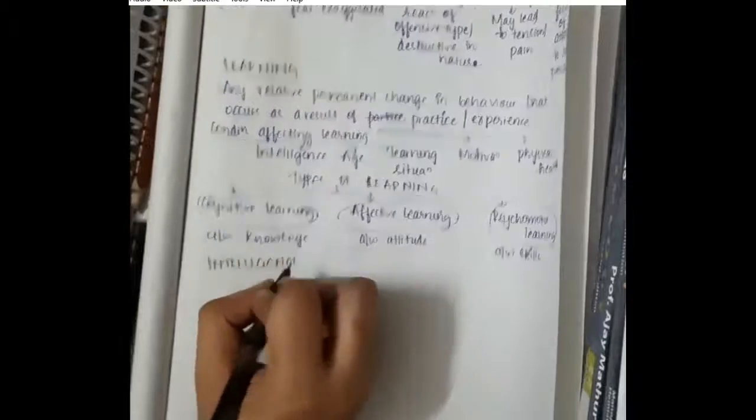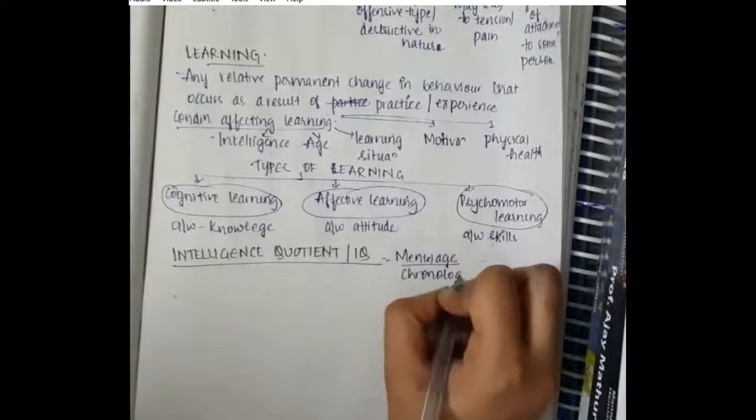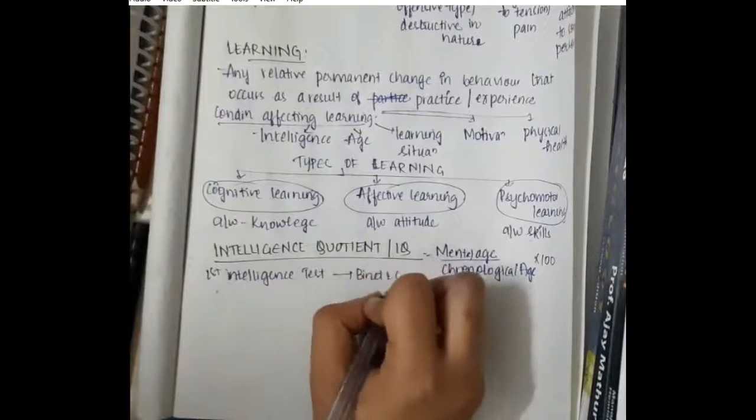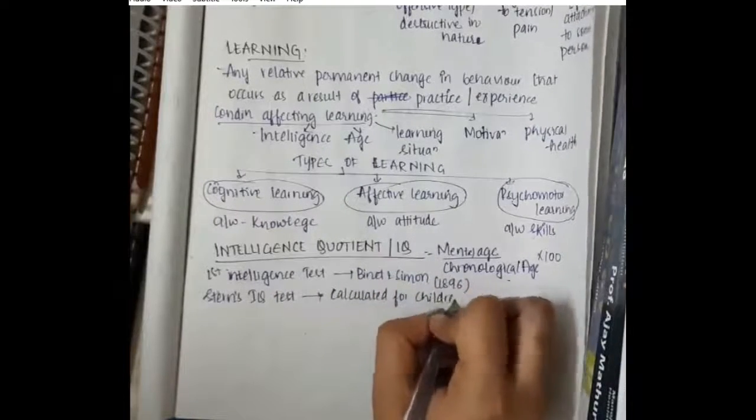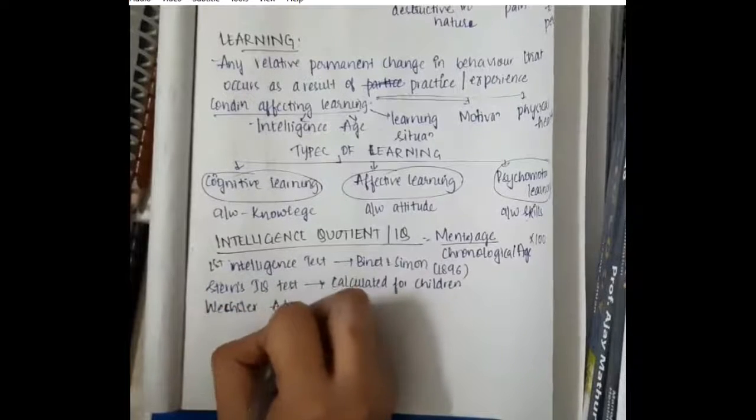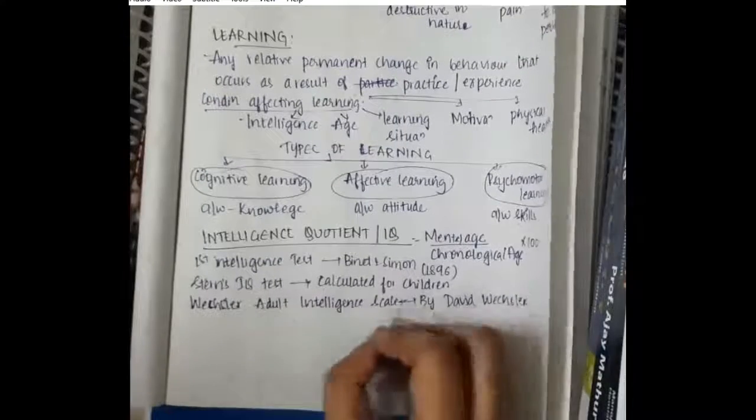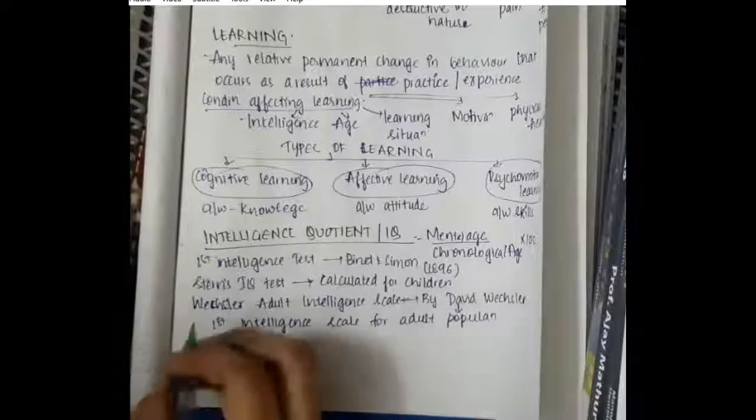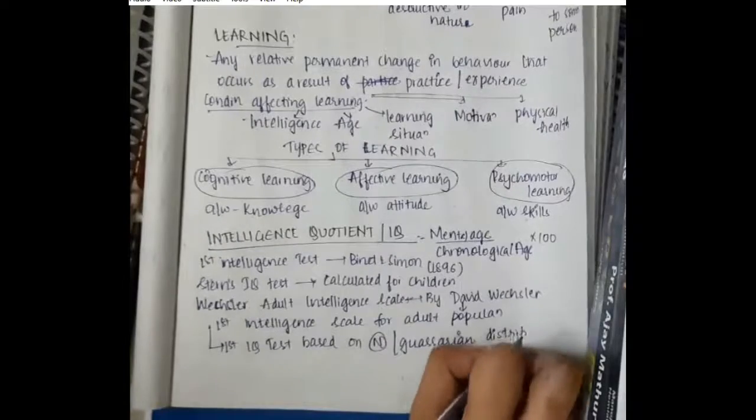Then we have intelligent quotient or IQ. IQ equals mental age divided by chronological age times 100. The first intelligence test was given by Binet and Simon in 1896. Stern's IQ test is calculated for children. Weschler's Adult Intelligence Scale, given by David Weschler, is the first IQ test based on normal or Gaussian distribution.